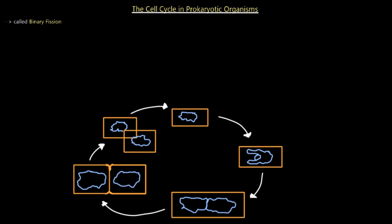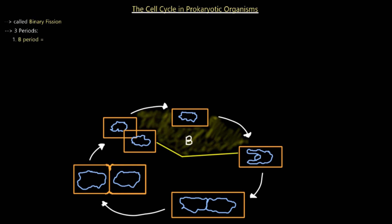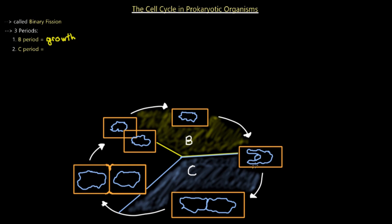We're going to go over this cycle and outline the three different periods that exist. First we have the B period, which is outlined by cell growth. Once the cell is made from the two previous cells, it enters into the cell growth phase — that's the B period. It continues to grow, enlarge, and synthesize things. This period is outlined mostly by cell growth and it stops — the B period goes up until DNA replication begins.